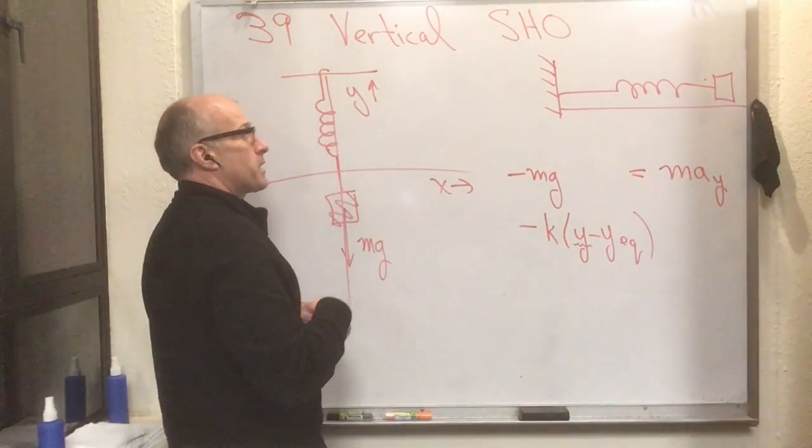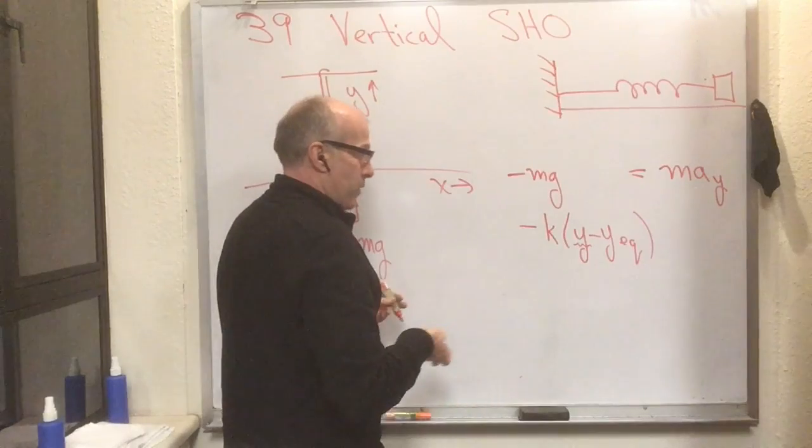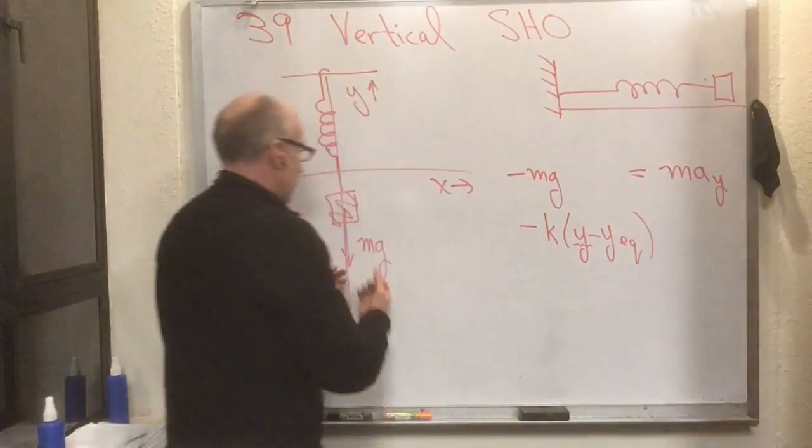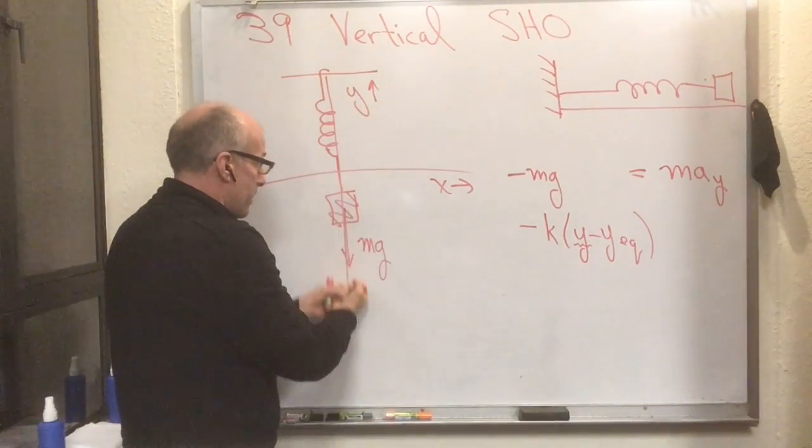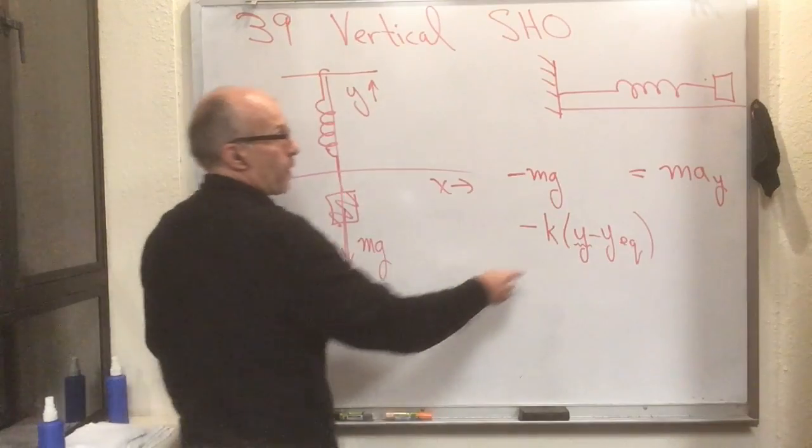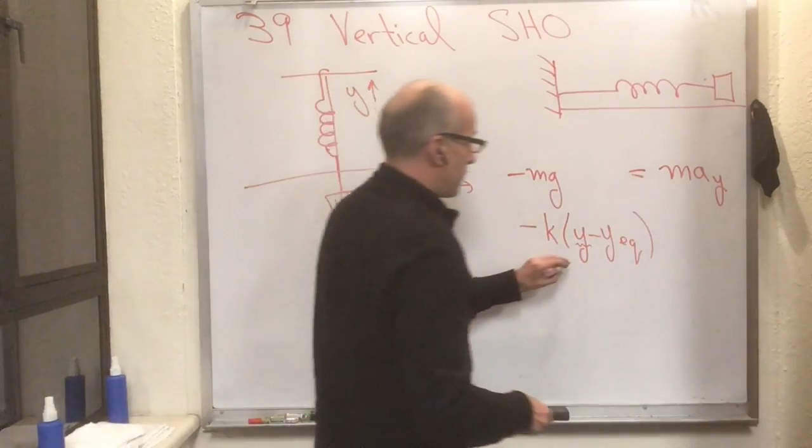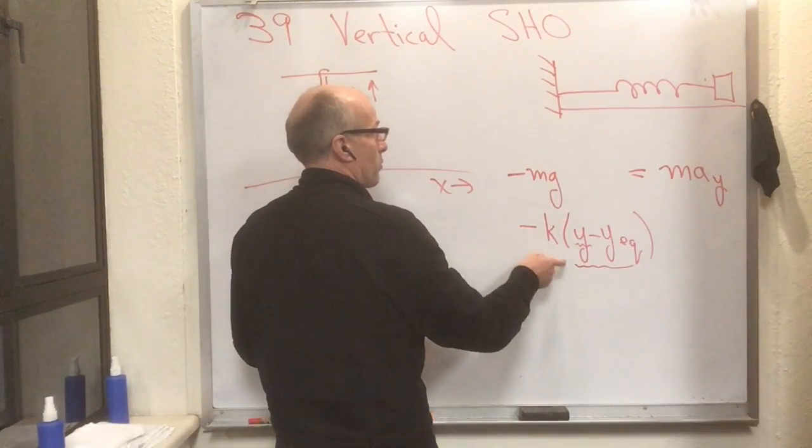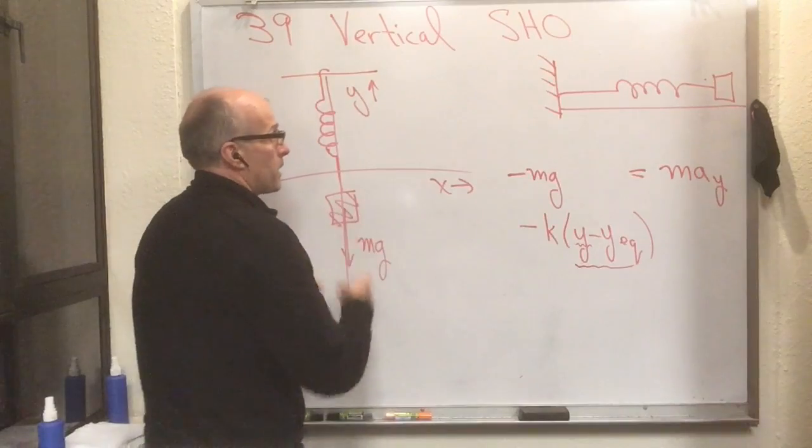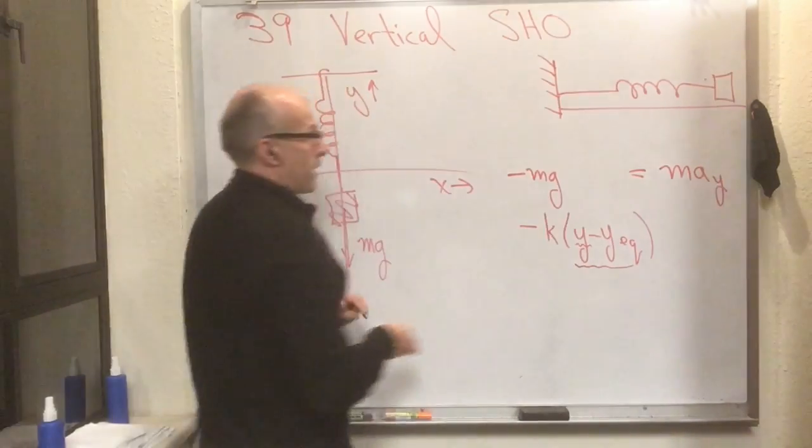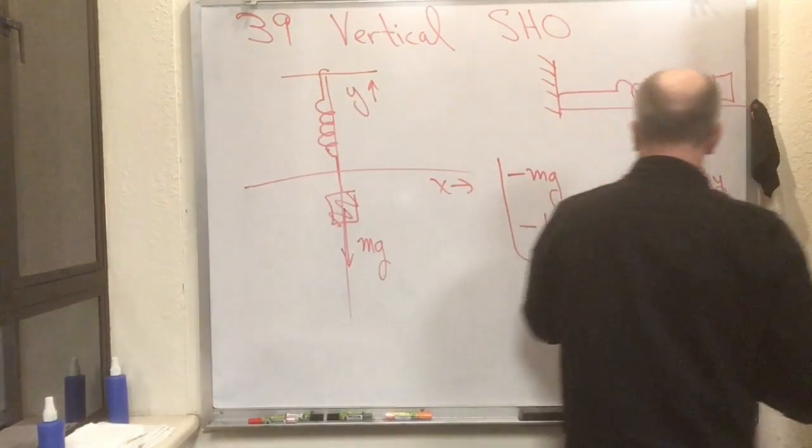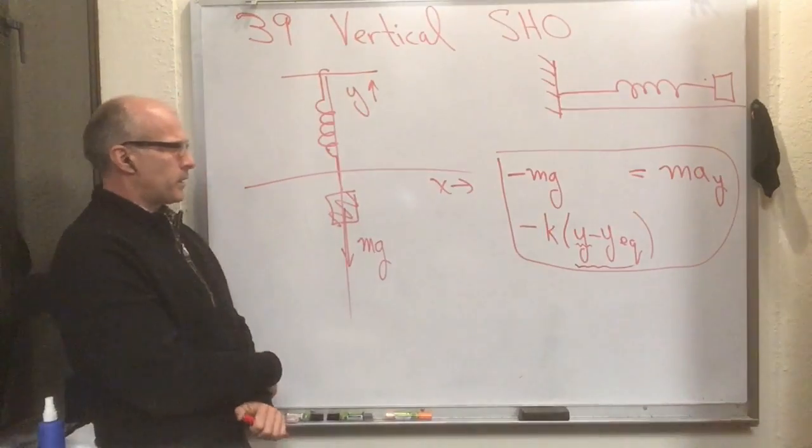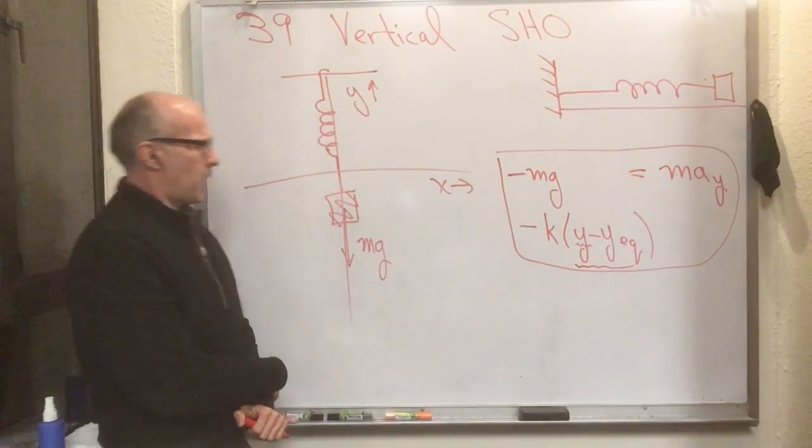Conversely, if y is less than y_equilibrium, that means I pulled the spring down on the y axis. If y is less than y_equilibrium, then this difference is a negative number which gets multiplied by this negative number, turns into a positive number. If I pull it down, then this is indeed pulling up. So there's your equation.